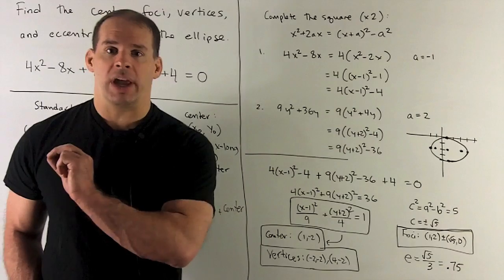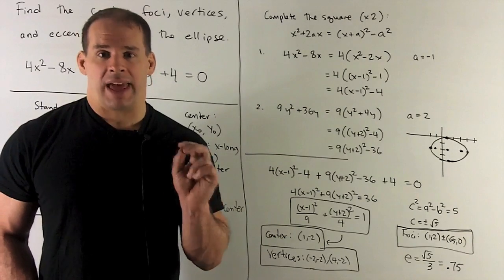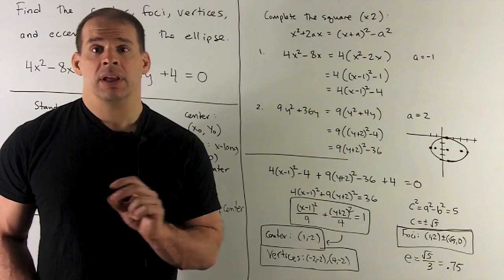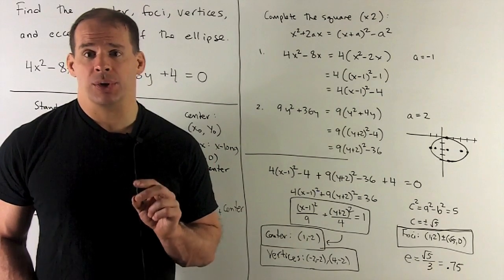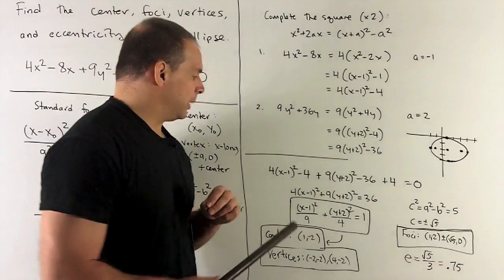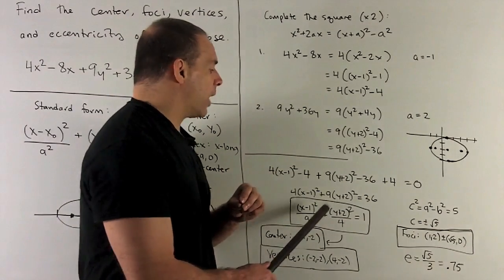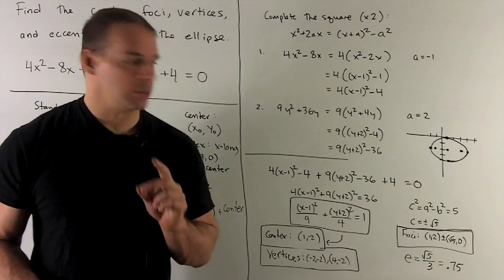Now, go to the original equation. Replace the x and y expressions with their new ones. Replace, simplify, and then algebra is just going to carry us to our standard form, which will be (x - 1)²/9 + (y + 2)²/4 = 1.